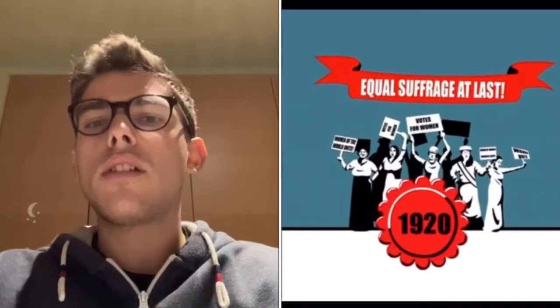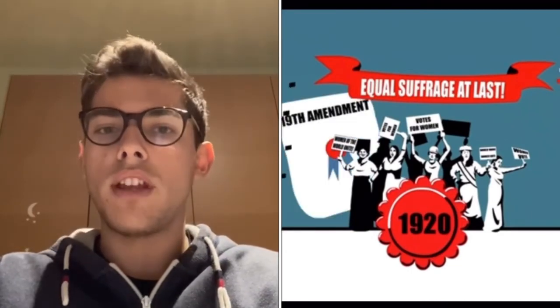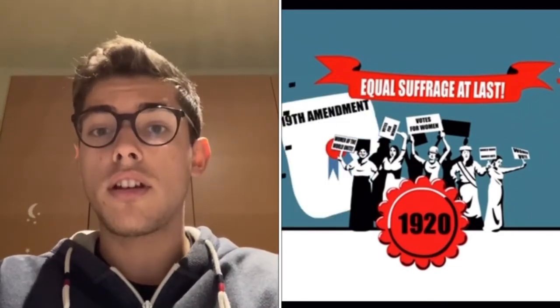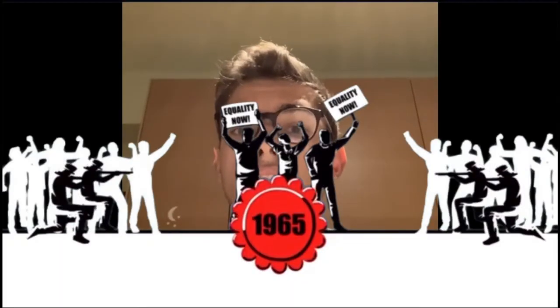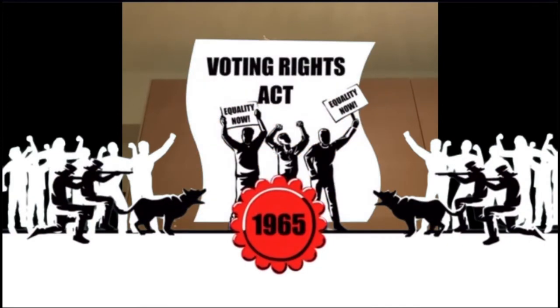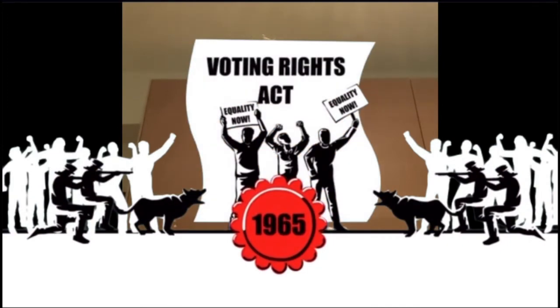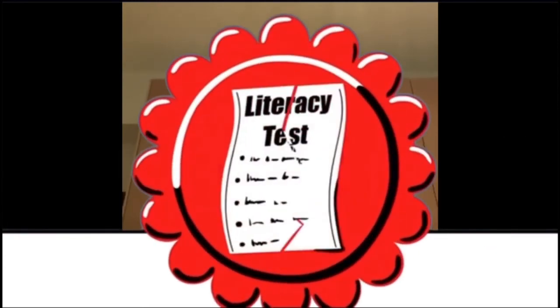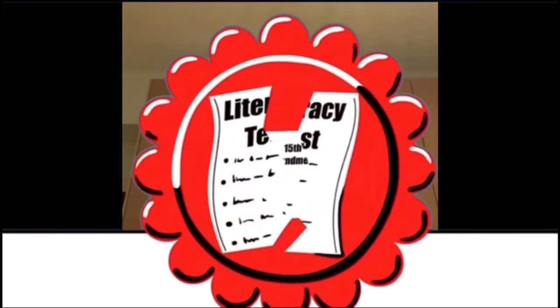In 1920, there was a very important win for women — equal suffrage — but still only white women could vote. Finally, in 1965, after years of fights and pain, the United States passed the Voting Rights Act, which eliminated poll taxes and protected the right to vote.